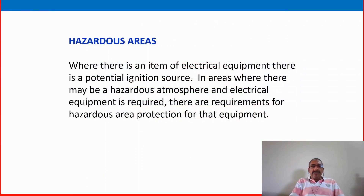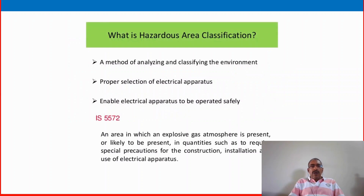Hazardous Areas: where there is an item of electrical equipment, there is a potential ignition source. In areas where there may be a hazardous atmosphere and electrical equipment is required, there are requirements for hazardous area protection of that equipment. Hazardous Area Classification is a method of analyzing and classifying the environment into hazardous and non-hazardous areas.